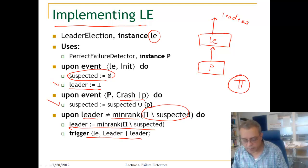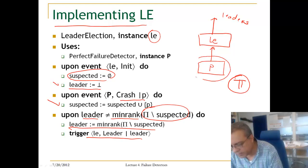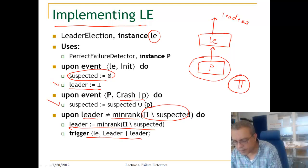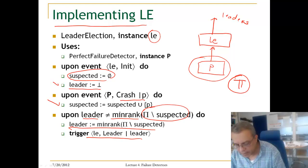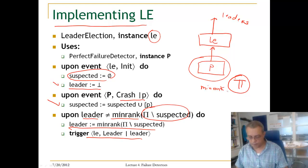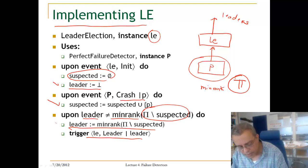Strong completeness — that we always eventually trust the correct process — is guaranteed by the strong completeness property of the perfect failure detector P. Agreement is guaranteed by the accuracy of P plus agreement on the minimum rank function and the ranking of processes. Local accuracy follows because we do not switch leaders unnecessarily in this algorithm.